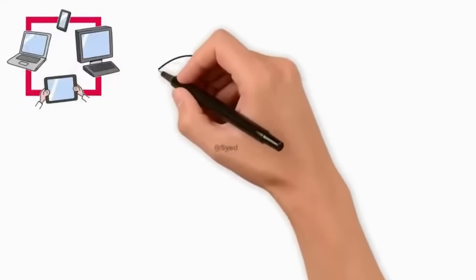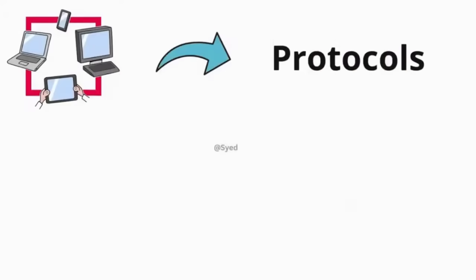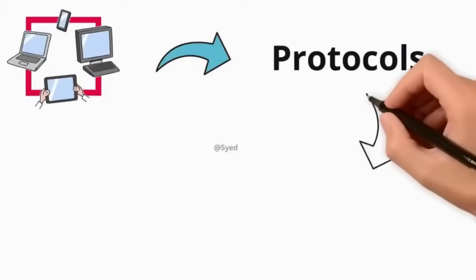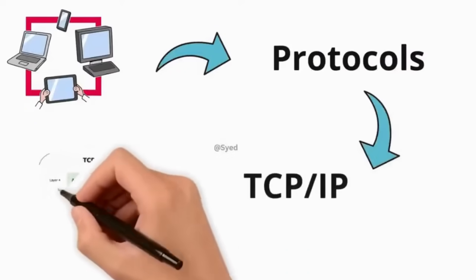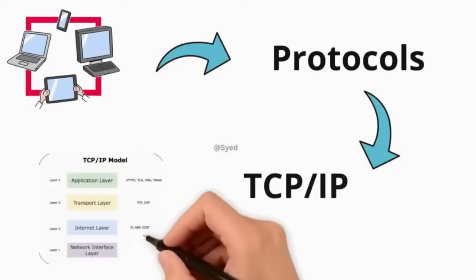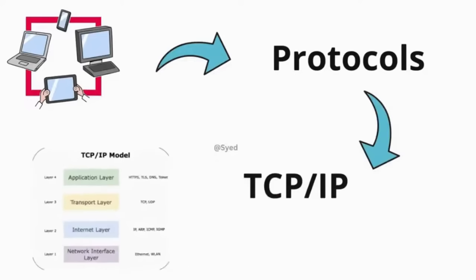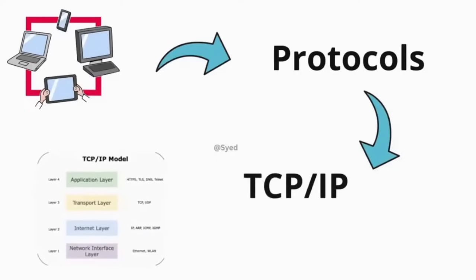Networks operate through rules known as protocols. One of the most important sets of protocols is TCP/IP. It breaks information into small packets, transmits them across the network, and reassembles them at the destination.